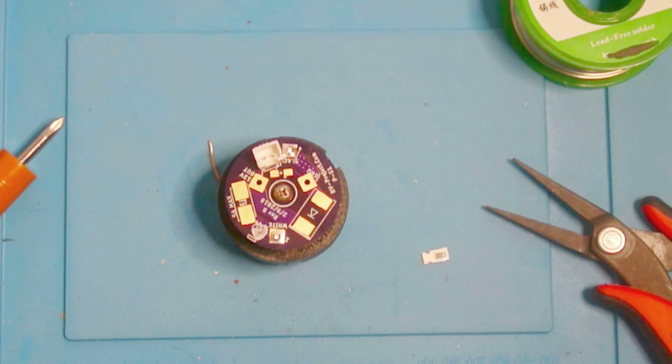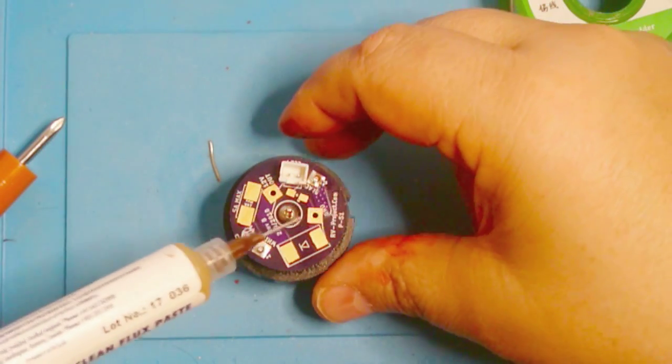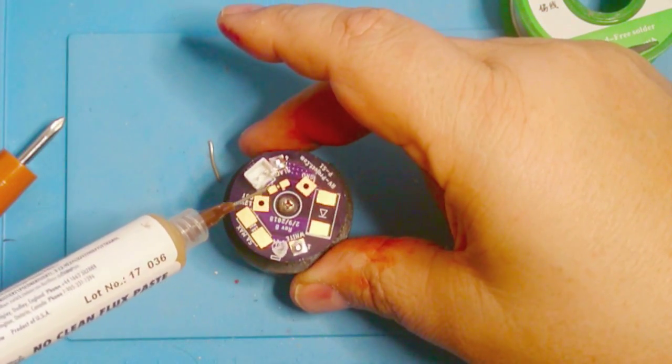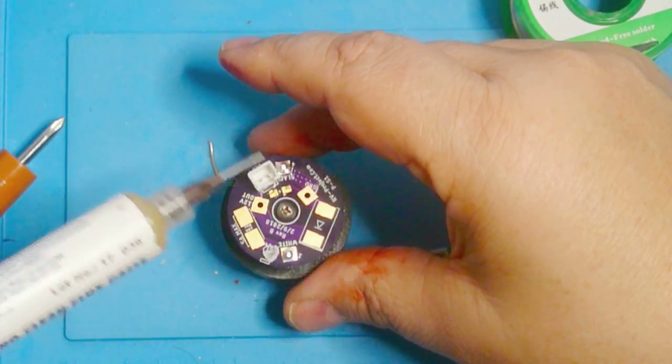The next thing we want to do is put the current limiting resistor in for the LED. Unfortunately, we have to deal with some surface mount technology, which is really the only way that I could get these parts in here.